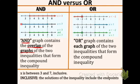And the overlap is the AND inequality. As you can see, that green graph right there is the overlap of the red and the blue. Another word for overlap would be the intersection or where they cross paths.